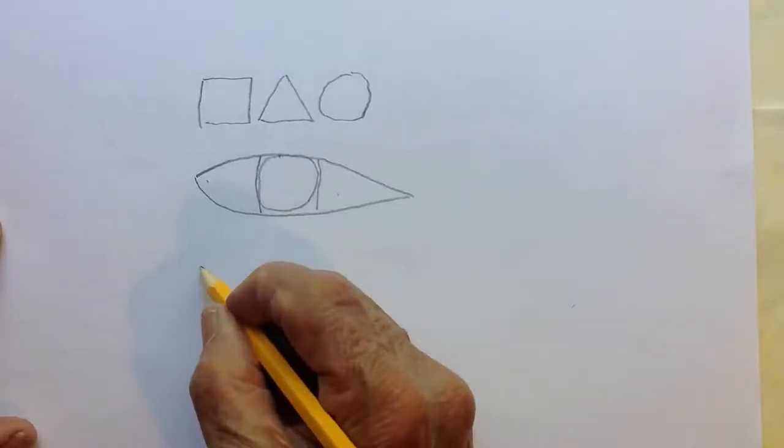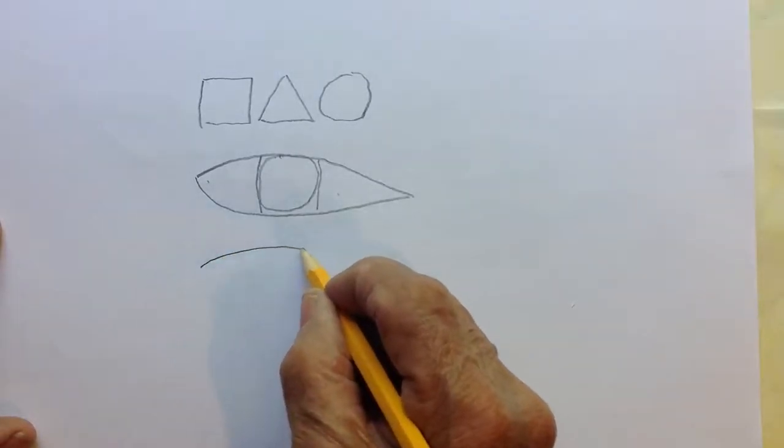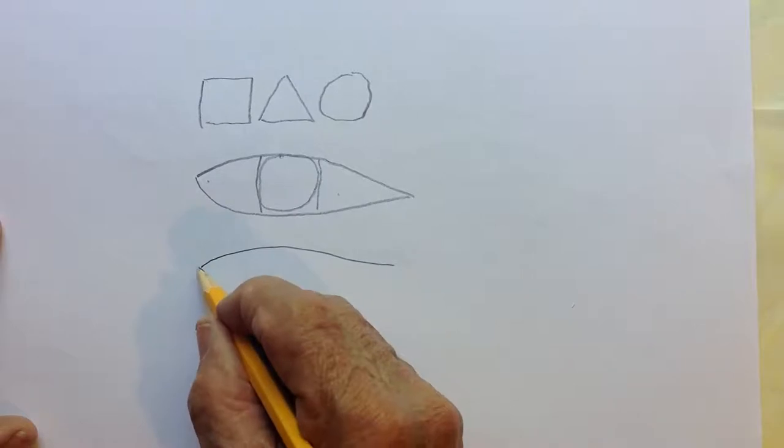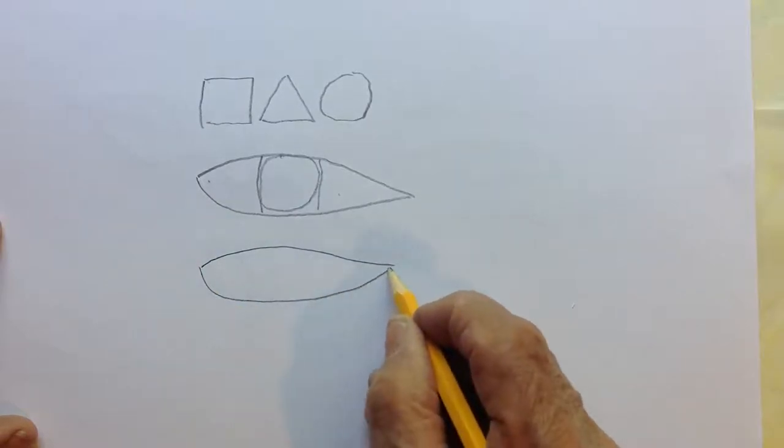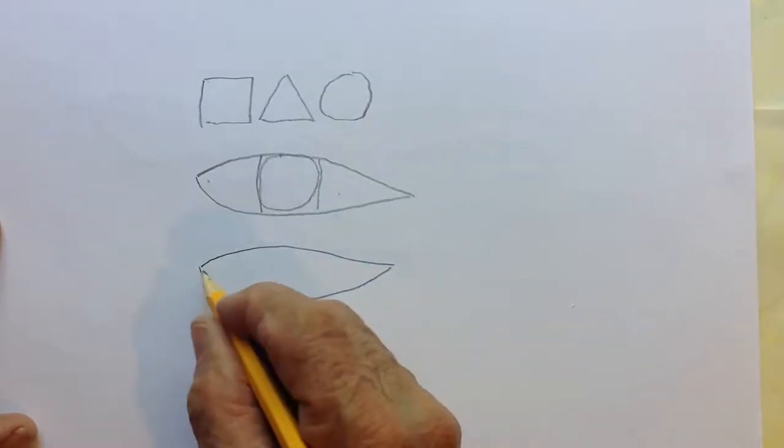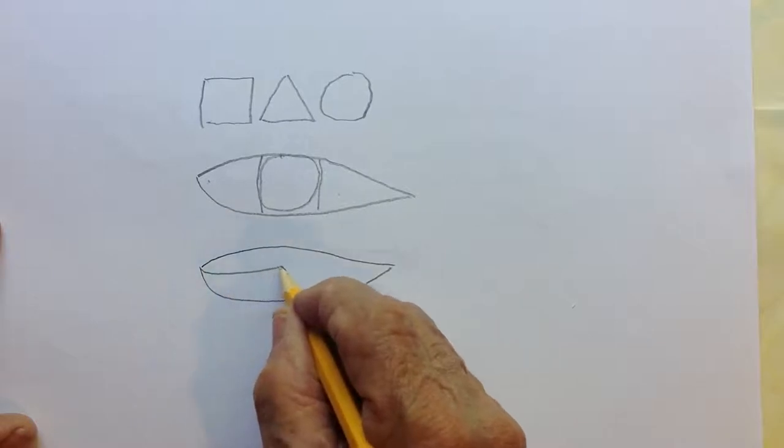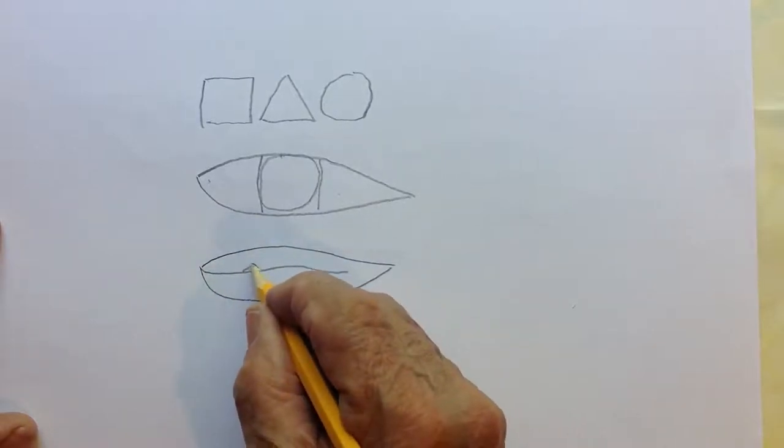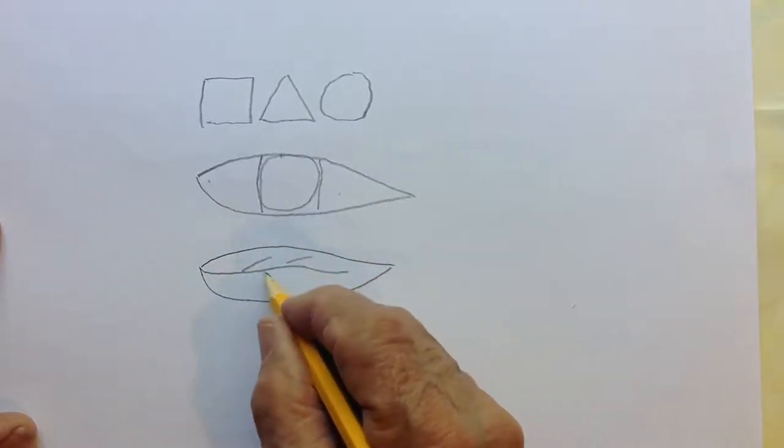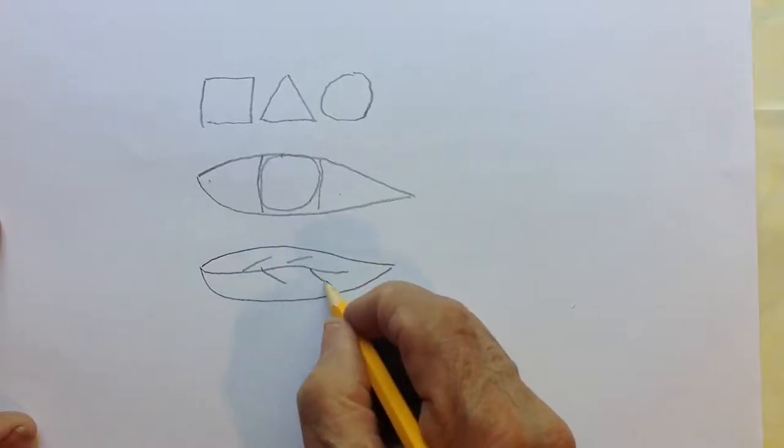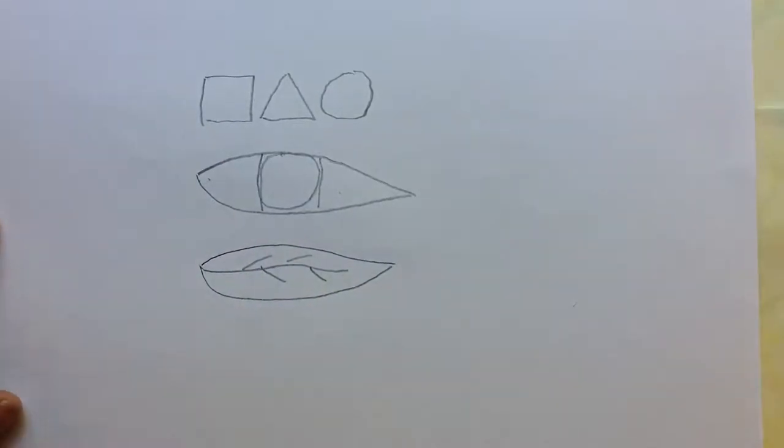Now I'm going to draw a leaf using that same eye shape, and I'm just going to add a vein to it. And I'll put little veins off, and I always offset it because it makes it a little more interesting.